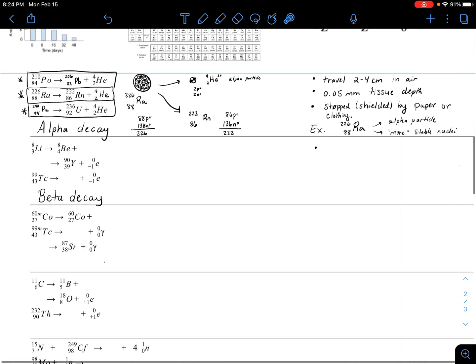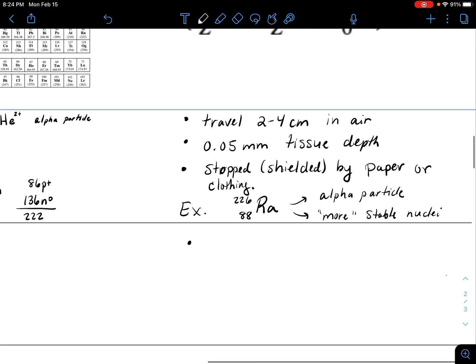What kind of traveling distance does this beta particle have? It can travel anywhere between 200 to 300 centimeters in air. It is a much smaller mass particle, so it can travel a little farther. They can go four to five millimeters of tissue depth, which is around about a half inch of skin.